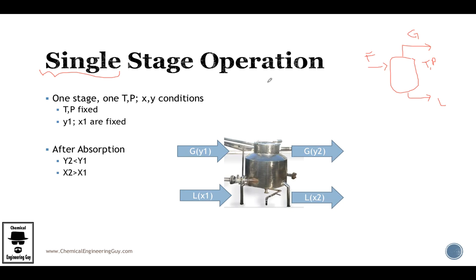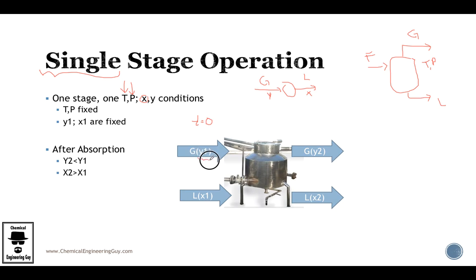The same is true for absorption. Remember that the main goal of absorption is that you have a gas with a solute — let's say Y — which will interact with the liquid, and the liquid will strip the solute from the gas. Let's call it X to differentiate the solute in the gas and liquid phases. Temperature and pressure will be fixed, and at the initial condition, you will have a certain value of Y1 in the gas phase, say 3%, and the liquid may initially have 0% or maybe 1%.